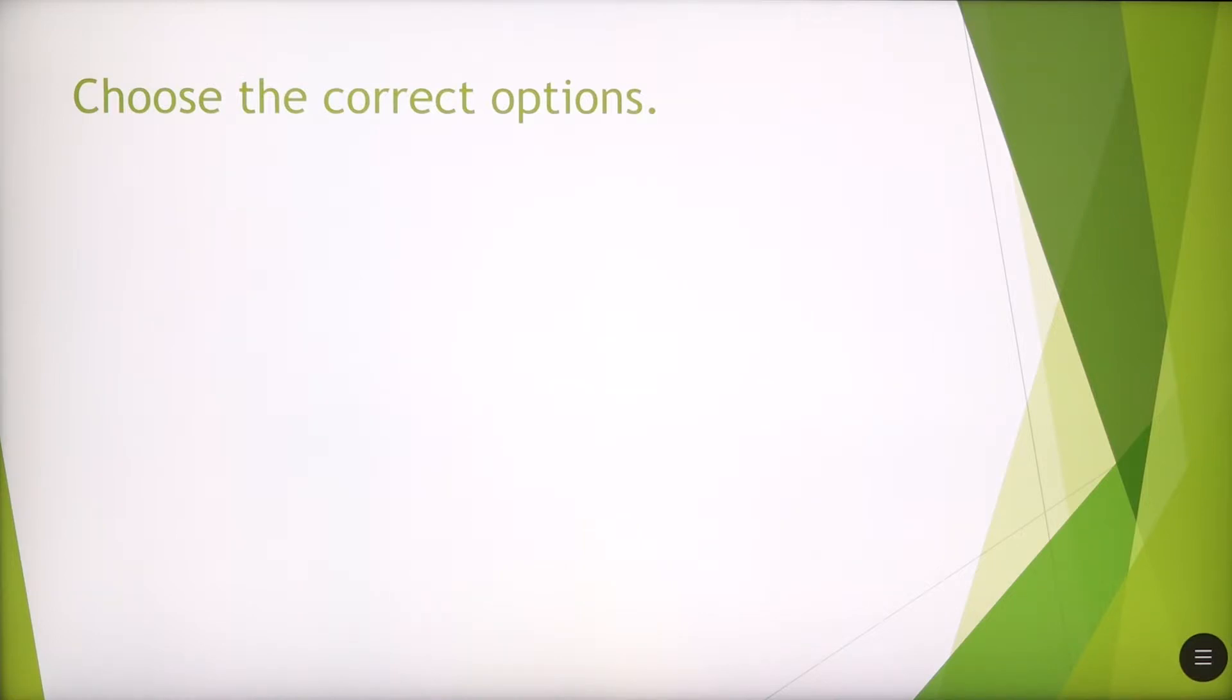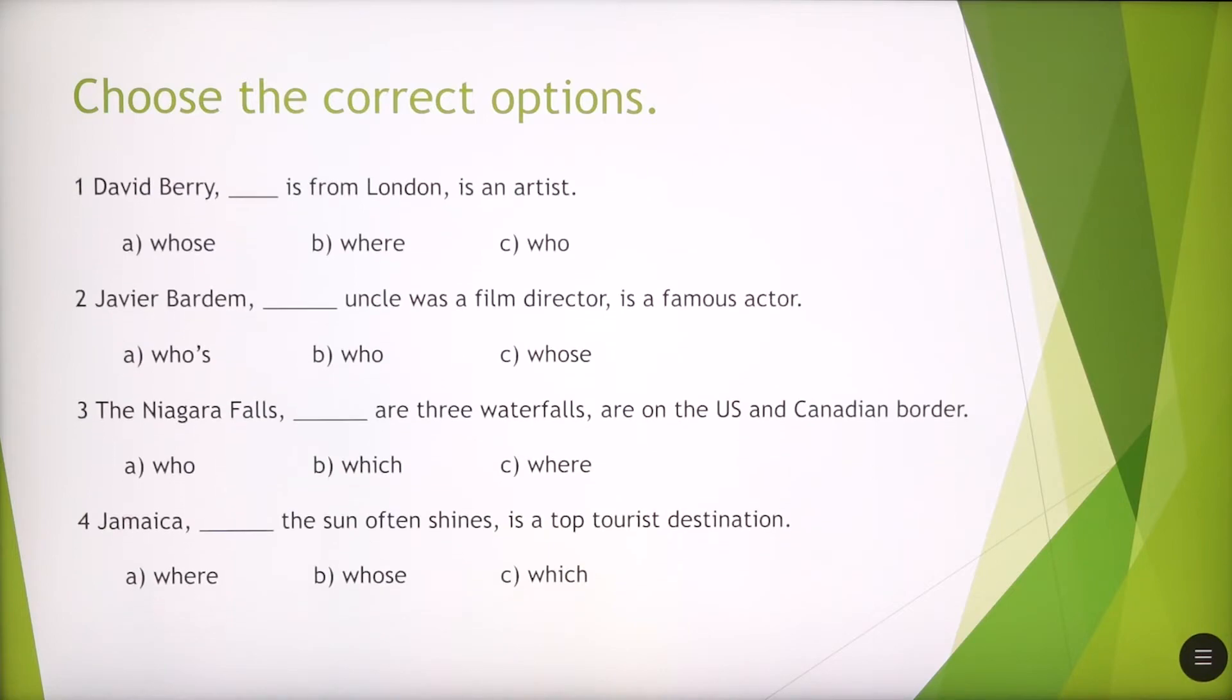Now you have to choose the correct option. So we've got some sentences here which require a non-defining relative clause. You have to choose between whose, where, and who or which. The relative clause that is appropriate for each gap, you have to circle it. What do you think for the first one, David Barry, is it A, B, C? It's C. David Barry, who is from London, is an artist.